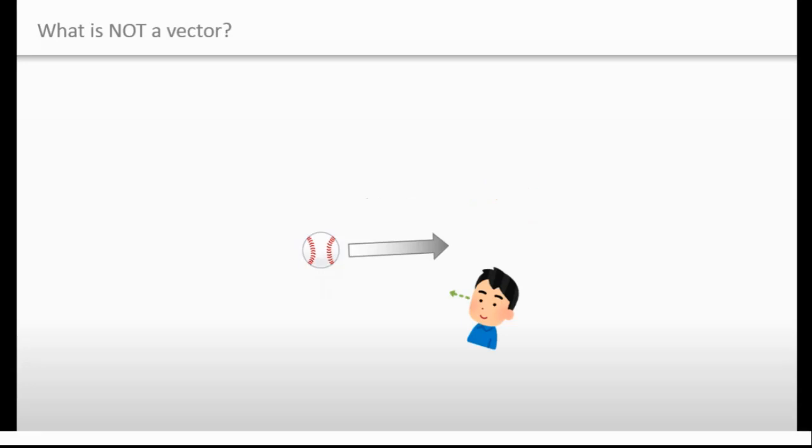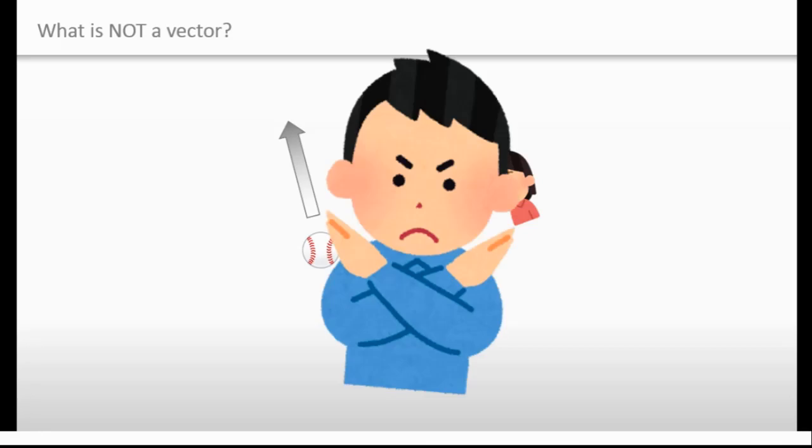The ball is going east if Smith looks at the ball, but the ball is going north if Johnson looks at the ball. This will never happen, right?